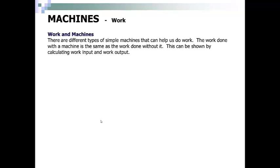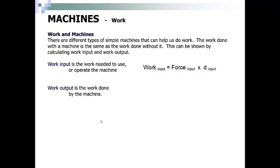There are many different types of simple machines that help us do work. The work done with a machine is the same as the work done without it. This can be shown by calculating work input and work output. Work input is the work needed to operate the machine: W_input = F_input × d_input. Work output is the work done by the machine: W_output = F_output × d_output.